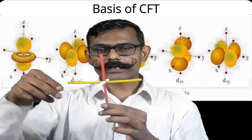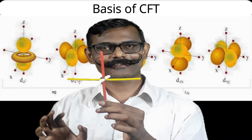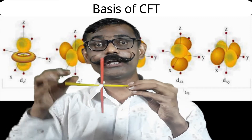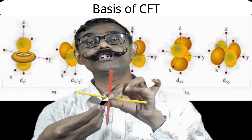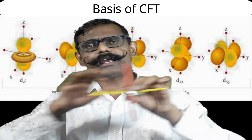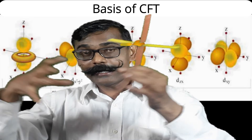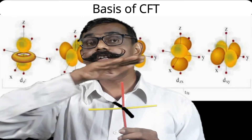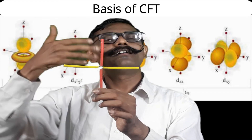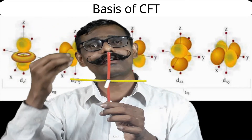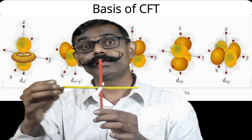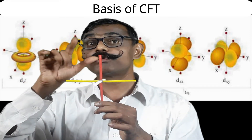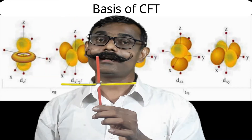Crystal Field Theory considers surrounding ligands as point charges. There is an electrostatic/ionic interaction between the negative point charge ligands and the positively charged metal ion. The d orbitals of the free metal ion are degenerate and spherically symmetric. In a hypothetical spherical field, degeneracy is maintained. But in actual geometries — octahedral, tetrahedral, square planar, trigonal bipyramidal — the interaction will not be uniform, and energy changes will occur.